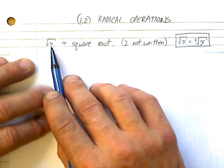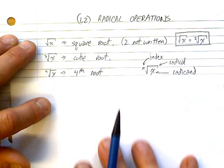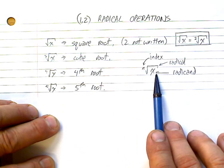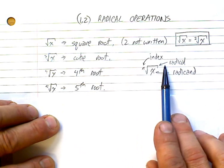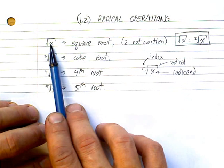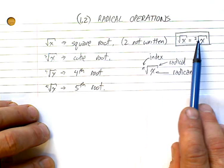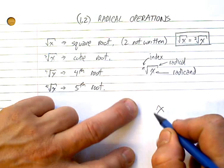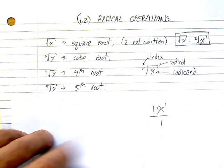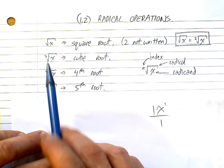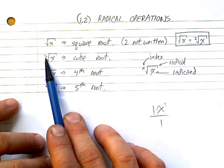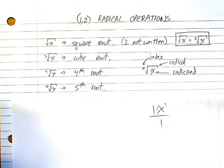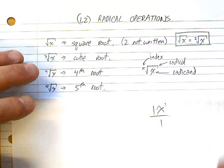First, we need to understand what a radical is. This symbol here is called the radical. The number outside is called the index, the number on the inside is called the radicand, and the symbol we all know as a square root is called the radical. For a square root we don't write the two — it's implied, just like the implied one in 'x' meaning x to the power of one. But for a cube root, fourth root, fifth root, we do write the index.